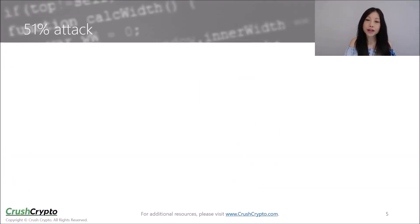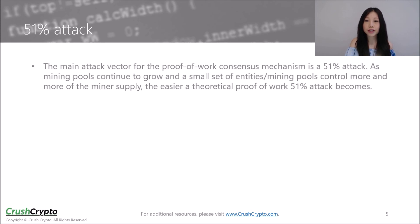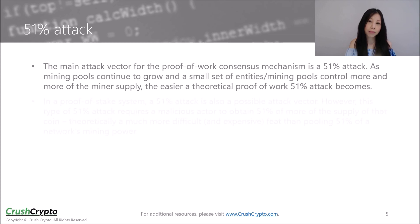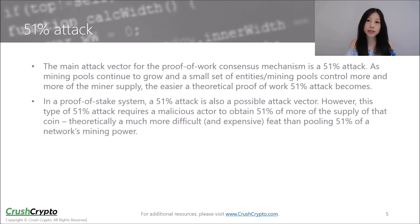As discussed in my earlier video on Proof of Work, the main attack vector for the Proof of Work consensus mechanism is a 51% attack. As mining pools continue to grow and a small set of entities and mining pools control more and more of the miner supply, the easier a theoretical Proof of Work 51% attack becomes. In a Proof of Stake system, a 51% attack is also a possible attack vector. However, this type of attack requires a malicious actor to obtain 51% or more of the supply of that coin. In theory, this is a much more difficult and expensive task than pooling 51% of a network's mining power.